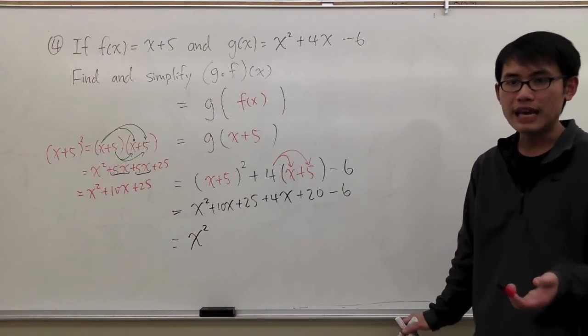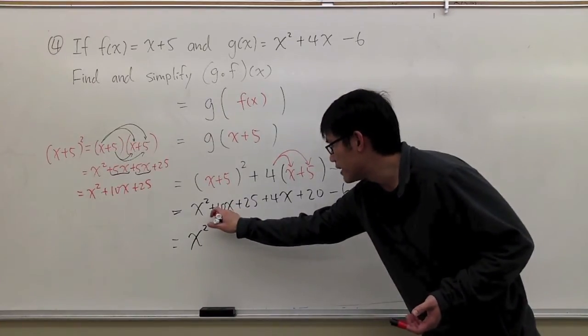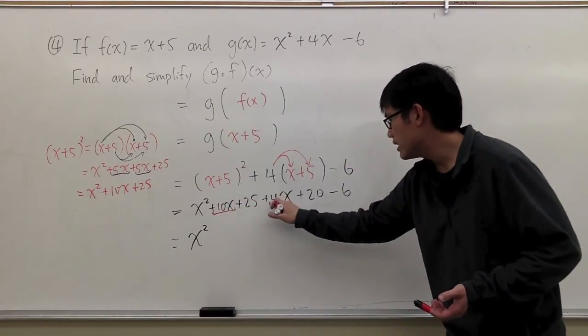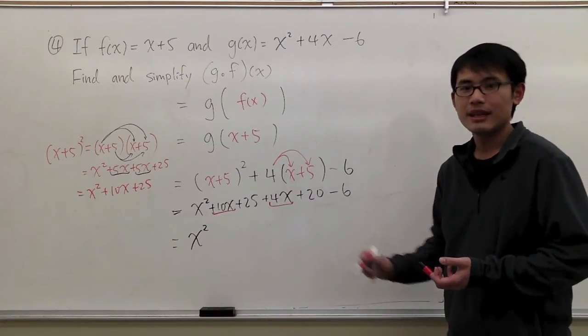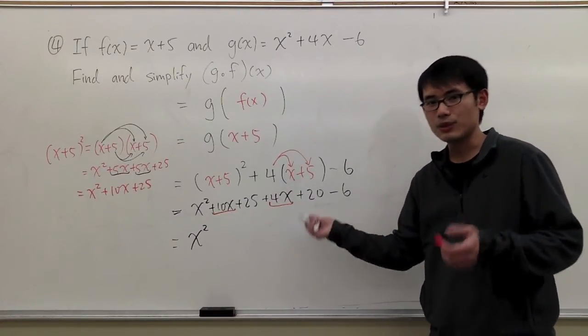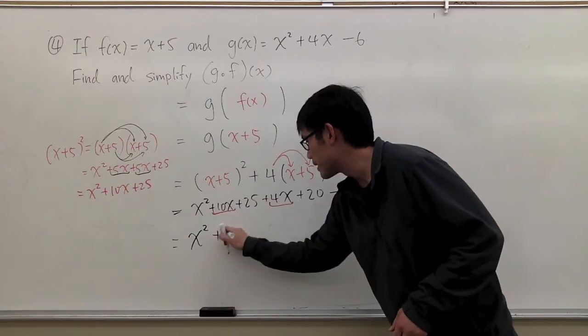And let's look for all the x. I see I have the 10x right here and the 4x right here. Positive 10x plus 4x, we get 14x. Plus 14x.